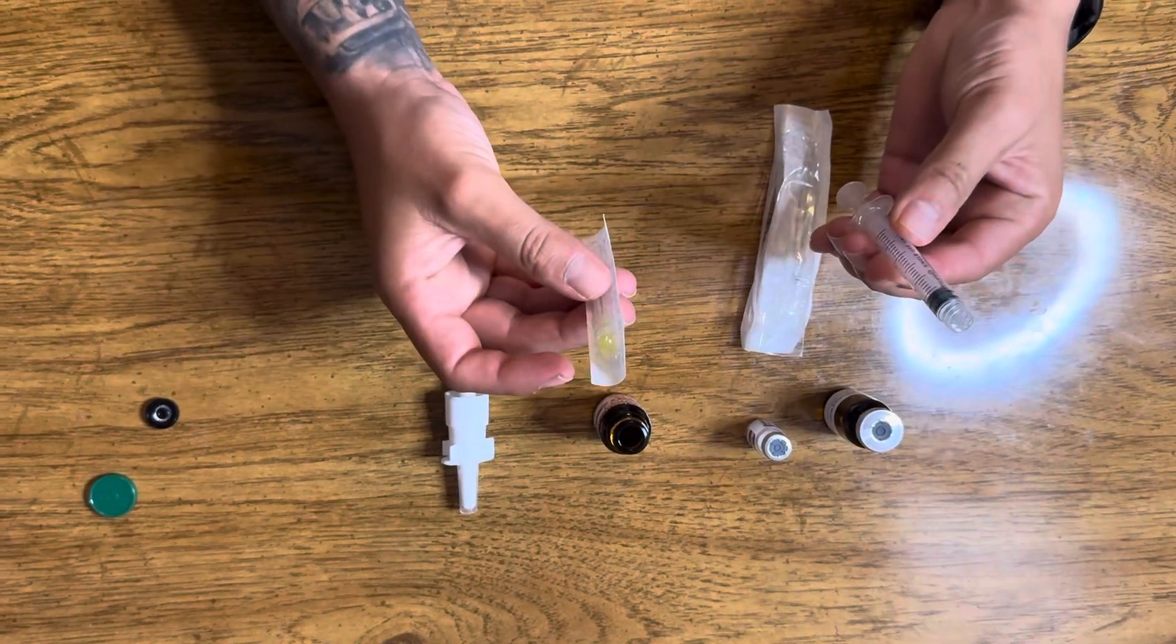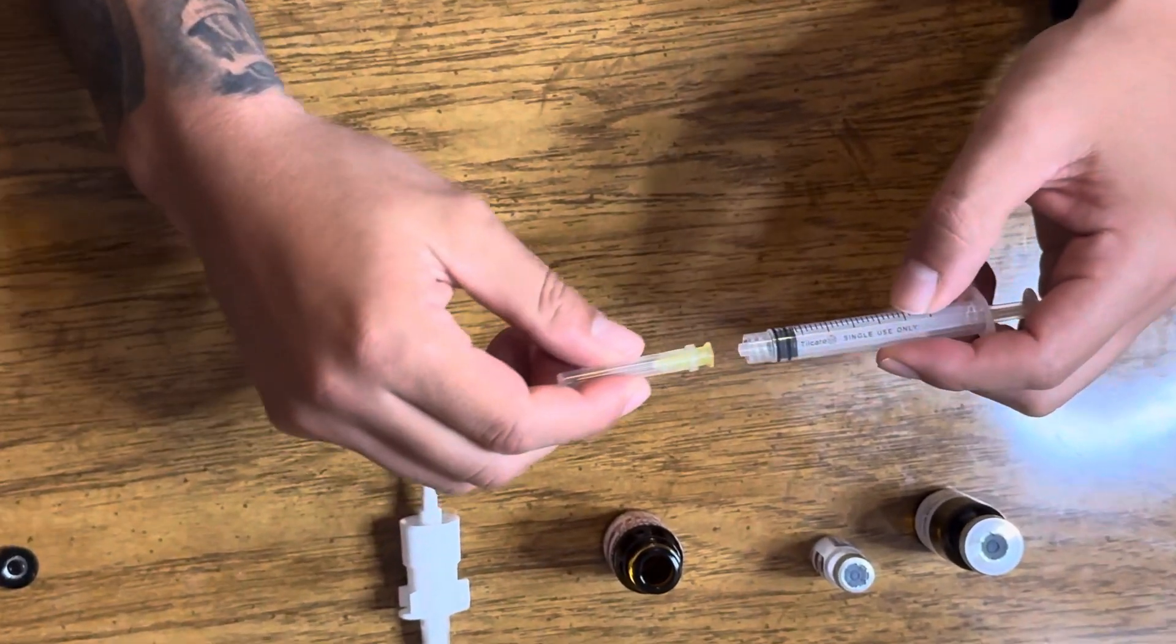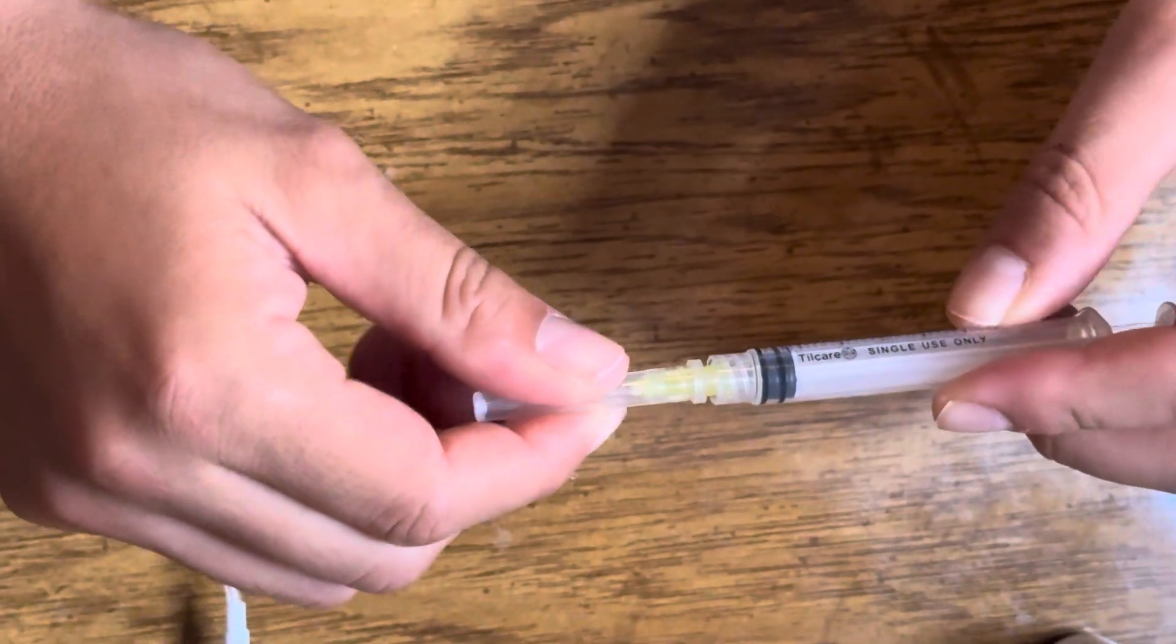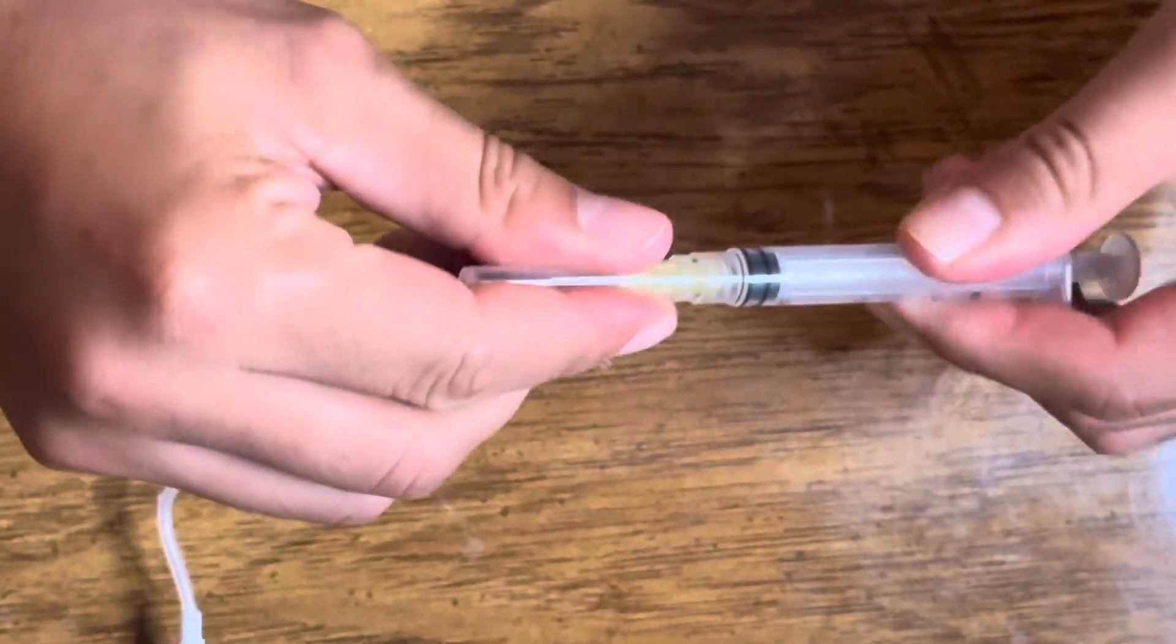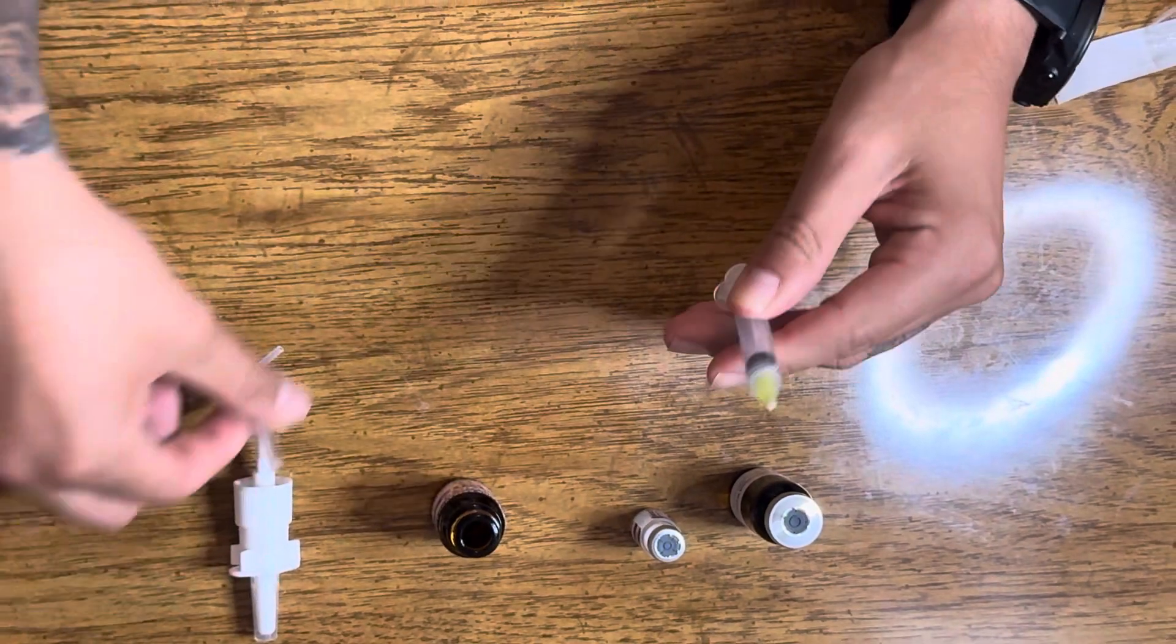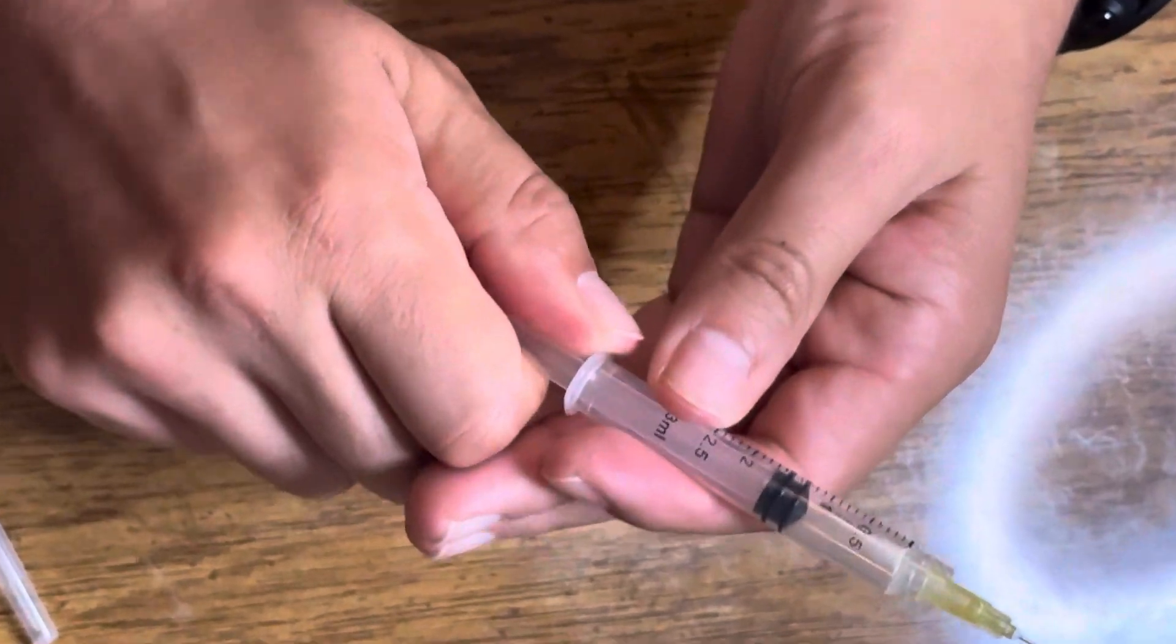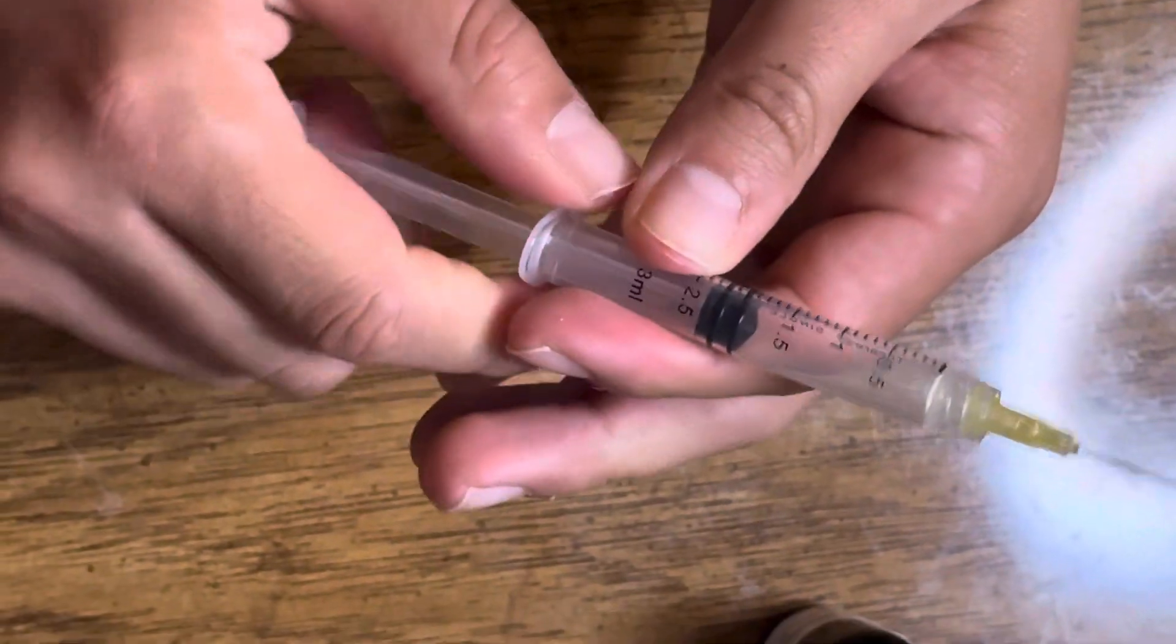Next step is going to be to put your needle together, and this is what it looks like. You just get it in, align it, and twist it in clockwise. You're going to uncap your needle. You're going to pull back the amount of water that you're going to try to get from your water, which in this case I'm going to start with two milliliters.